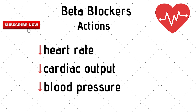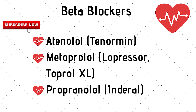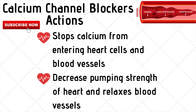Beta blockers — they decrease your heart rate, your cardiac output, and your blood pressure. Beta blockers are used for high blood pressure, angina or chest pain, patients with a history of heart attacks, to prevent heart attacks, and to treat cardiac arrhythmias. Common beta blockers are atenolol (Tenormin), metoprolol (Lopressor), and propranolol (Inderal). Most beta blockers end in the letters O-L-O-L.